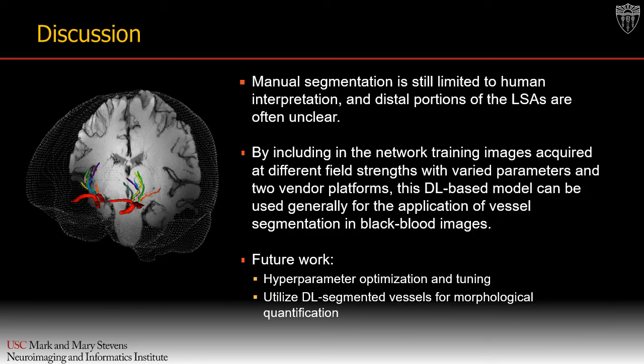The results of the high-res 3D net deep learning model are very promising, though results should still be observed with caution because manual segmentation is limited to human interpretation, and distal portions of the LSAs are often still disagreed upon. By including training images acquired at different field strengths with varied parameters and two vendor platforms, this deep learning model may be generally used for small vessel segmentation in black blood images. With further hyperparameter optimization and tuning, the model has the potential to facilitate morphological quantification of cerebral small vessels.